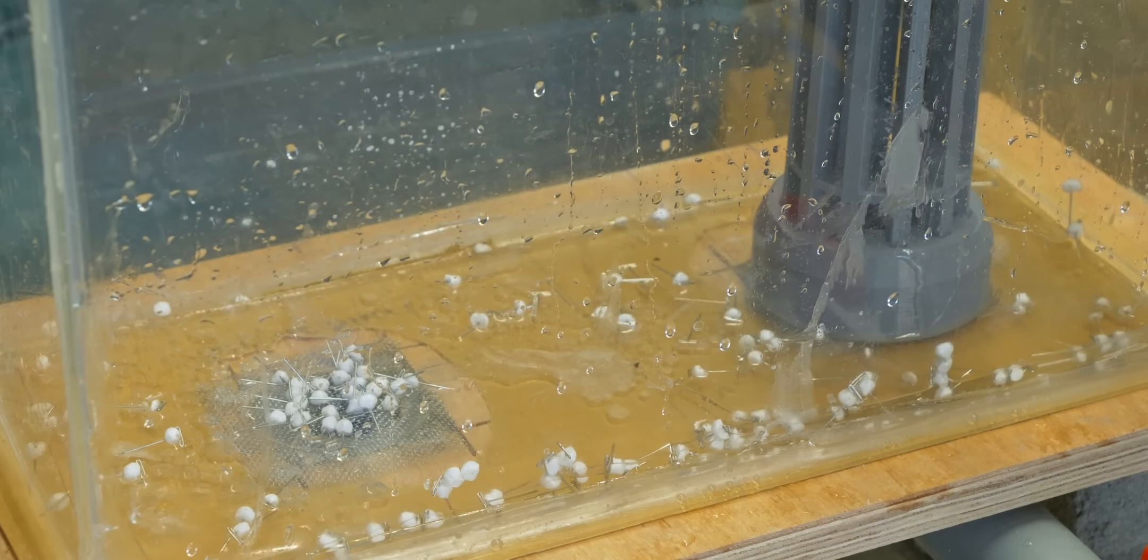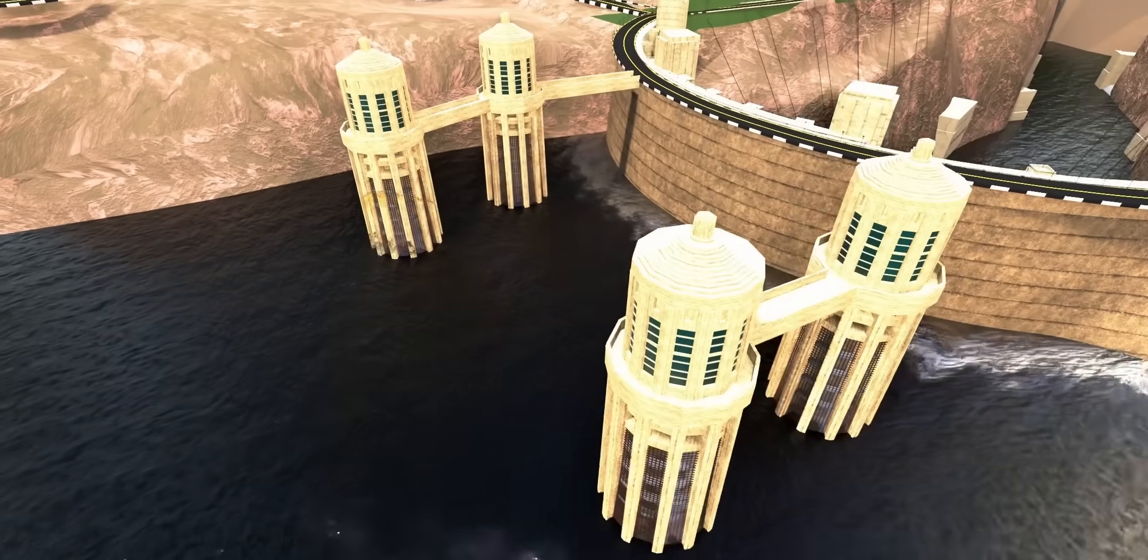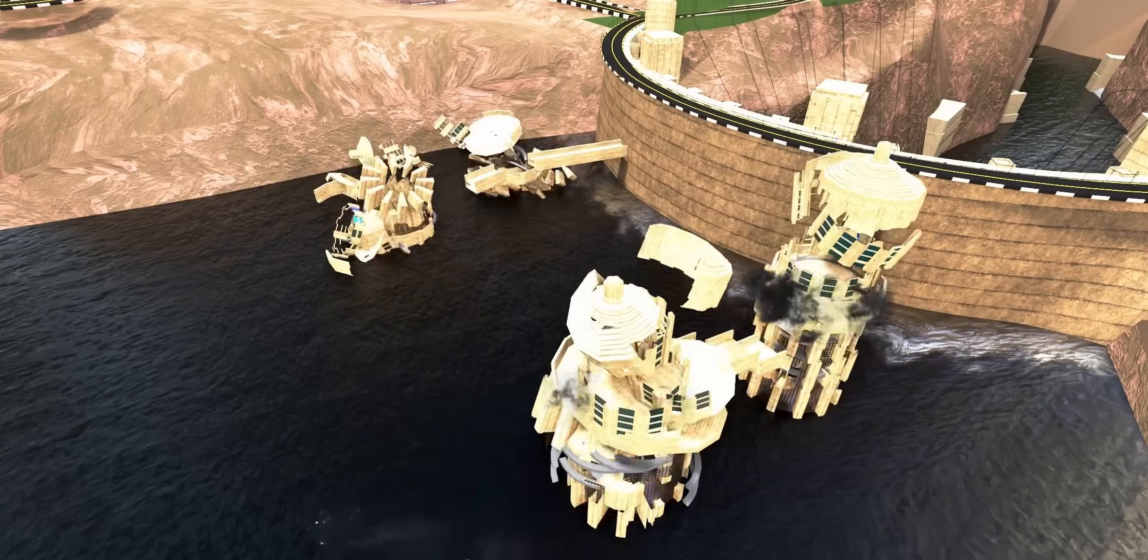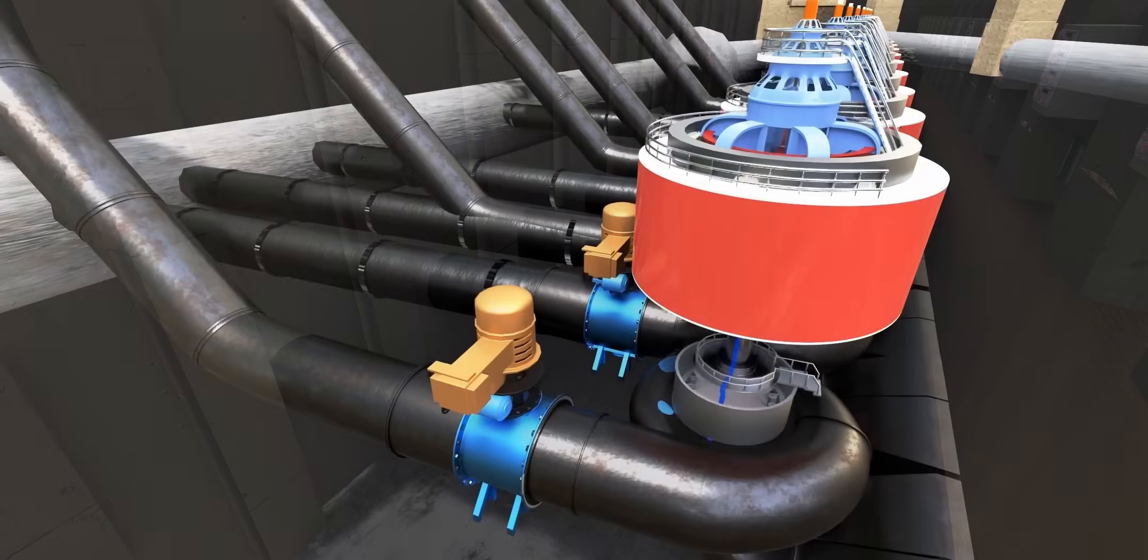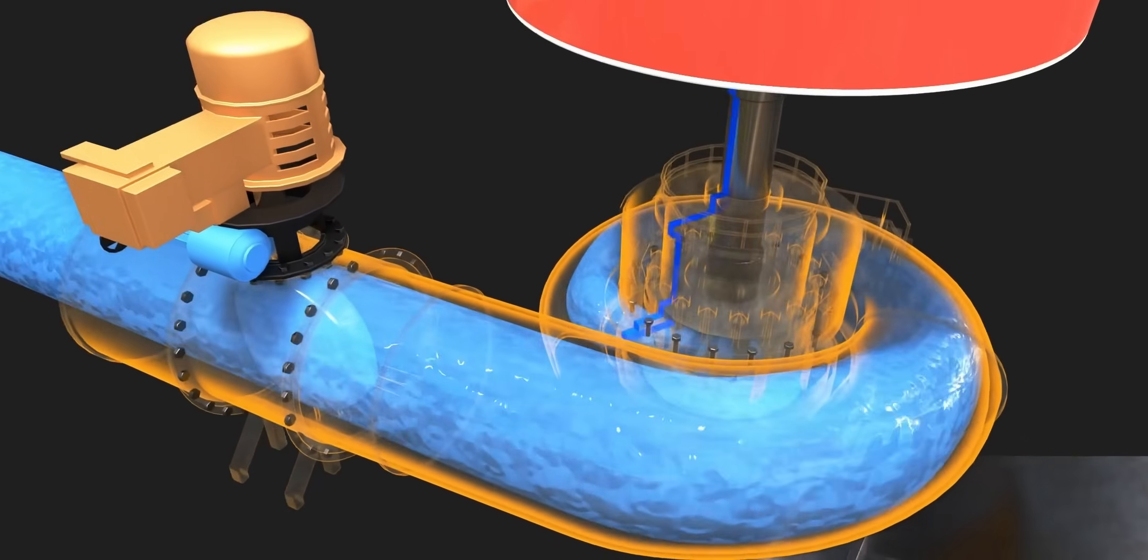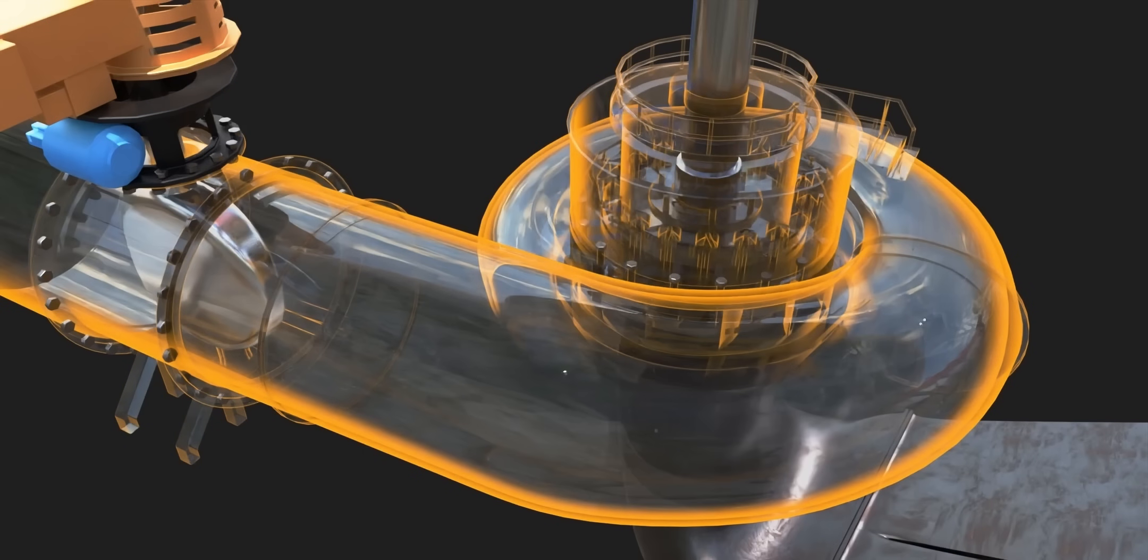This means, had the German spies succeeded in destroying the intake towers, the water flow to the turbines would have ceased immediately. Without damaging a single turbine or generator, the spies would have been able to cease the power production capability of Hoover Dam, the biggest power production facility of that time.